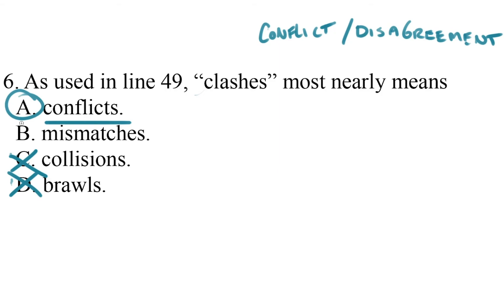Mismatches is tempting, but matching is really about pairs, and we're looking at disagreements among three things — three different ways of thinking about economics. And we're looking for something that most nearly means the same thing. So again, I cover up the answers, I make a prediction about what the word means in context, and then I bring that prediction back to the answer choices so that I can make my final selection.